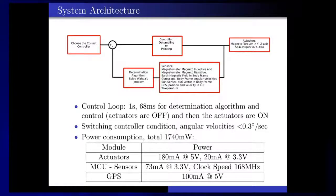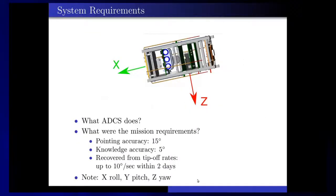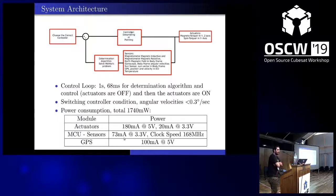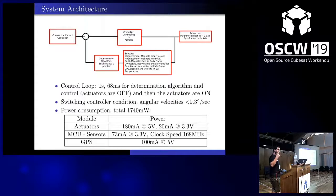The sensors in the system are two magnetometers of two different technologies — one inductive and the other resistive MEMS — that measure the magnetic field of the Earth in the body frame. A gyroscope that measures the angular velocities in the body frame. A sun sensor placed on the z-minus side. And a GPS that produces the position and velocity in the Earth-centered inertial frame.